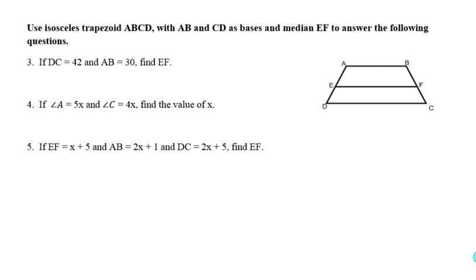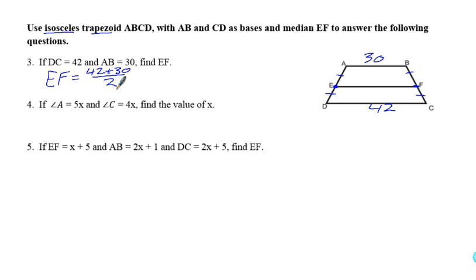Now let's look at some trapezoid problems. We have an isosceles trapezoid with bases AB and CD, and EF is a median, meaning EF is a midsegment connecting the midpoints of the legs. If DC = 42 and AB = 30, find EF. So EF = (42 + 30) / 2 = 72 / 2 = 36. EF equals 36.